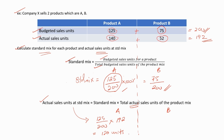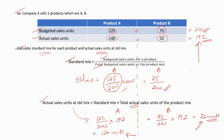For product B, actual sales units at standard mix = (75/200) × 192 = 72 units. You can double-check by adding: 120 + 72 = 192, which equals the total actual sales units of the product mix. So the answers are correct. This is how we calculate the standard mix and the actual sales units at standard mix for each product.